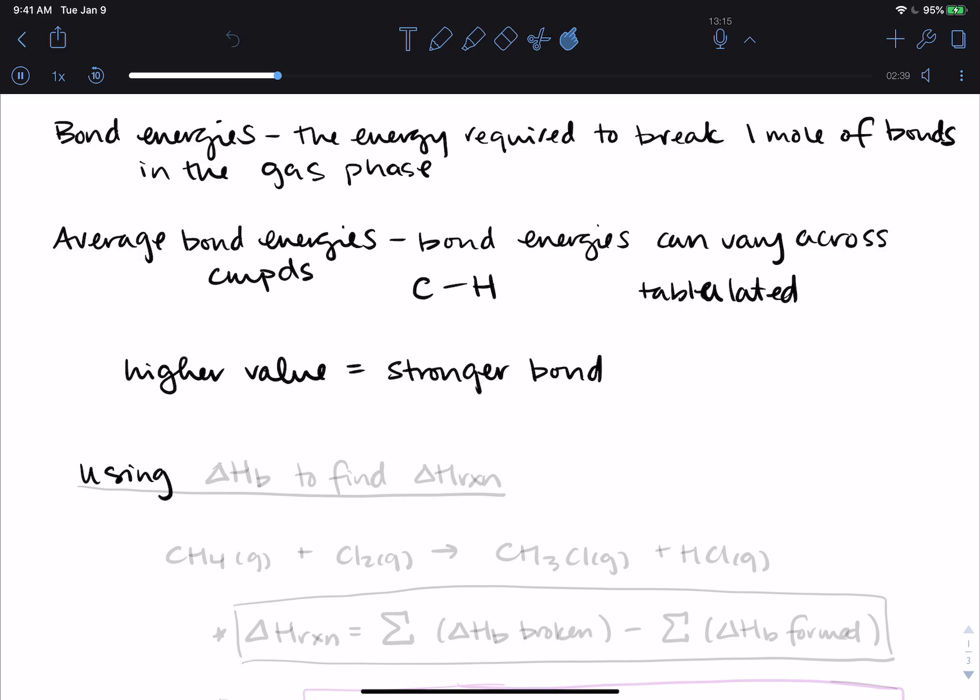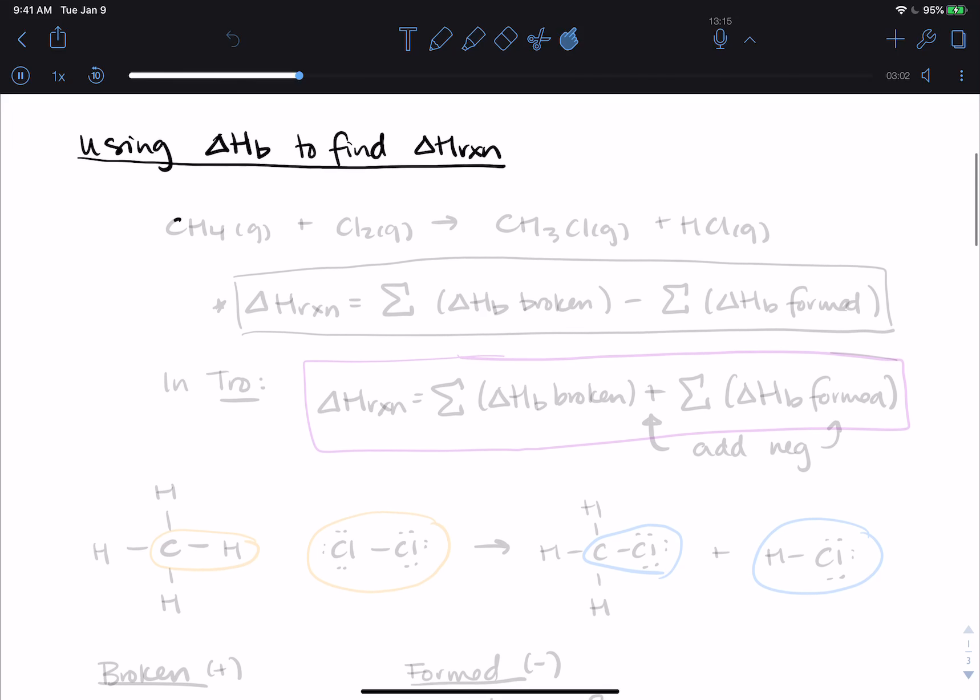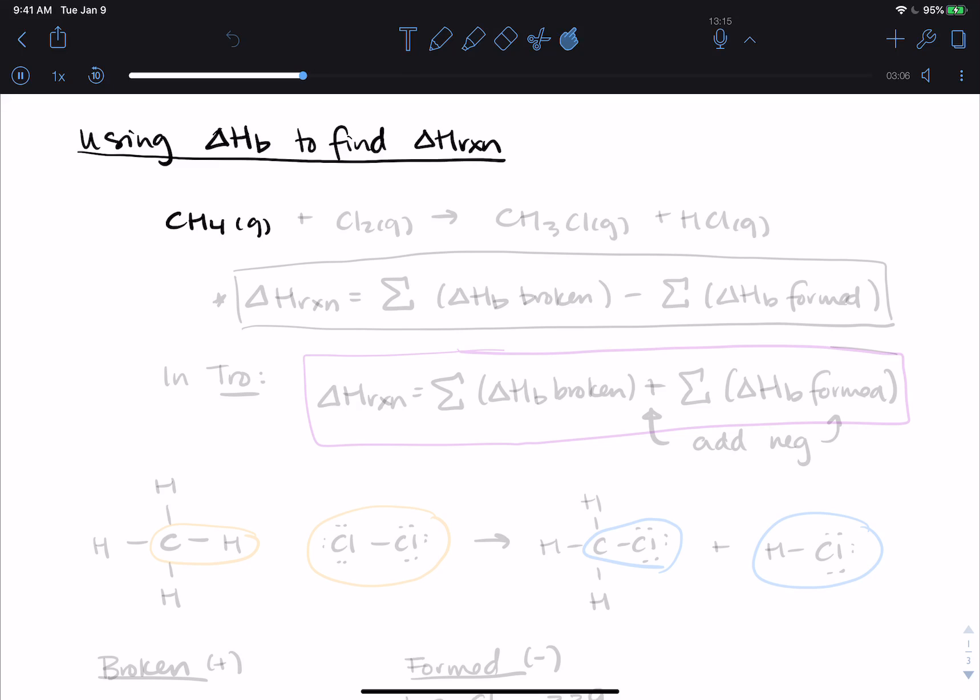So using bond energies, ΔHb, to find ΔH reaction. So this is where your knowledge of Lewis structures is going to be extremely important. So the reaction that we want to look at is CH4 gas plus Cl2 gas turning into CH3Cl plus HCl gas. So in this reaction, there were some bonds that were broken, and then we made some bonds. We can add up all of the energy that we put in and get out and get a ΔH reaction for this.